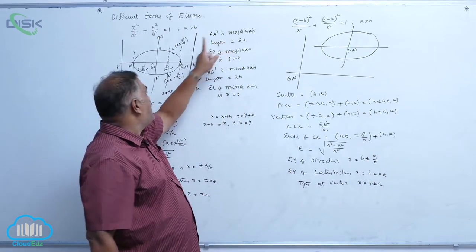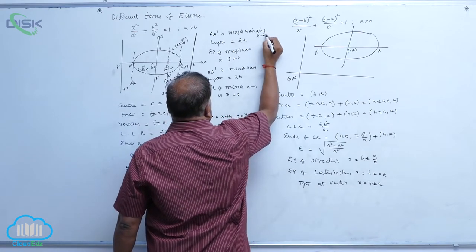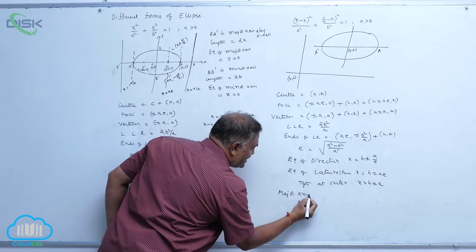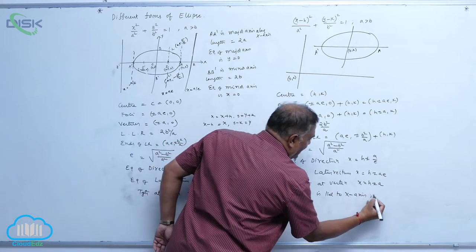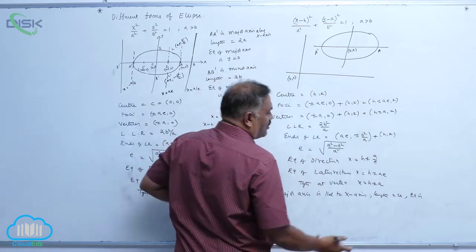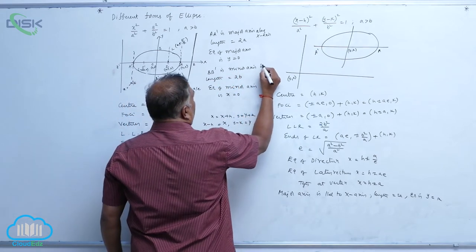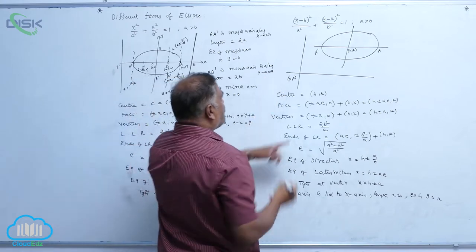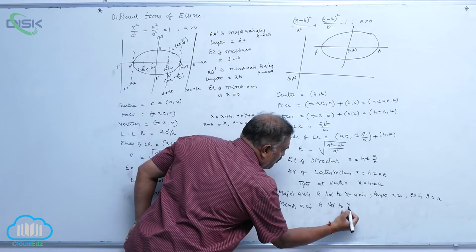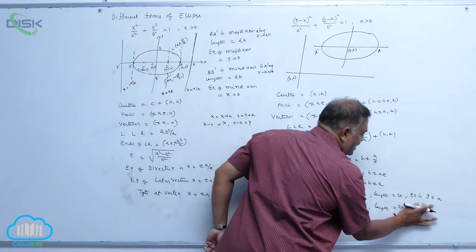For the standard ellipse, the major axis AA' is along the x-axis. For the shifted ellipse, the major axis is parallel to the x-axis, with length 2a and equation y = k. The minor axis BB' is parallel to the y-axis, with length 2b and equation x = h.